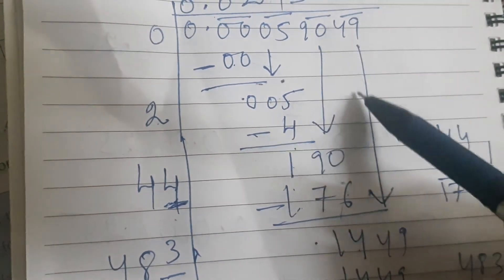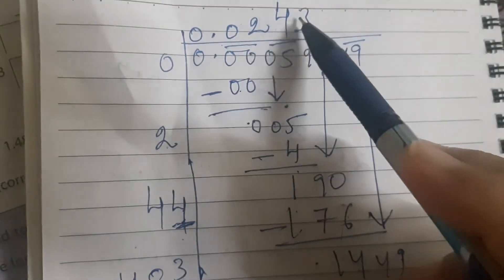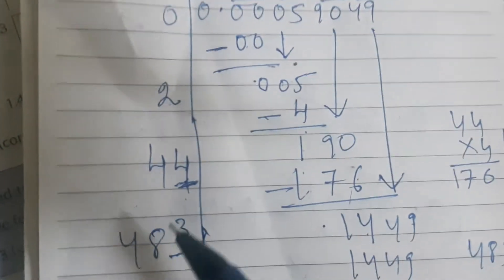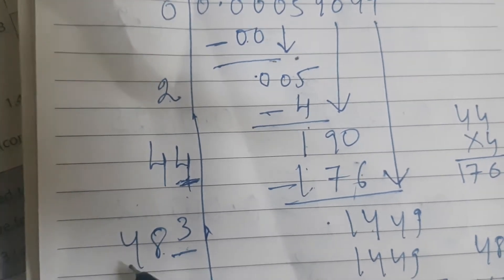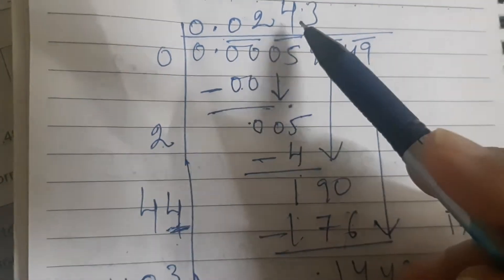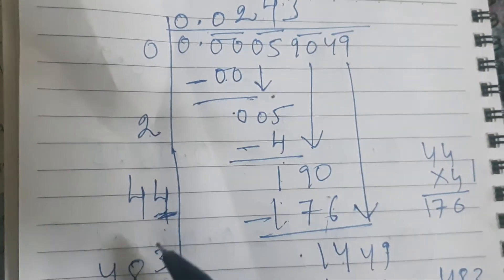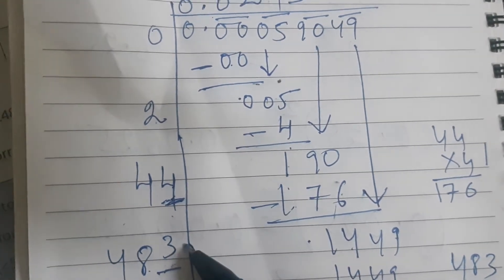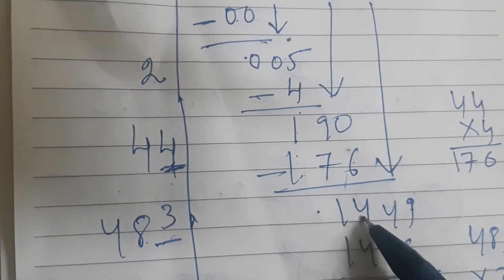Again, I am copying down the next period, which is 49. Now 44 plus 4. See here clearly. So 44 plus 4 is 48. That means I have to look for another digit, which will be placed at the place of blank. Similarly, I will be placing the same digit here in the quotient. So I found that when we multiply 483 by 3, it is 1449.